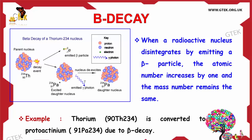The Beta particle is nothing but an electron, so it is getting decayed. This Protactinium then gets de-excited and Protactinium is generated again with the emission of a photon. This process is called Beta decay.